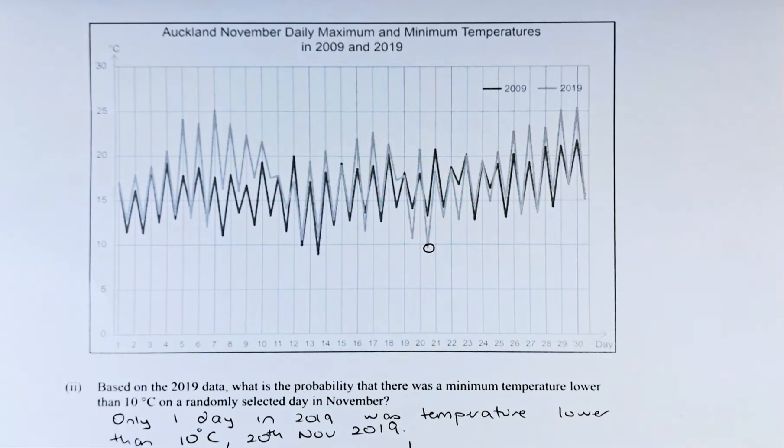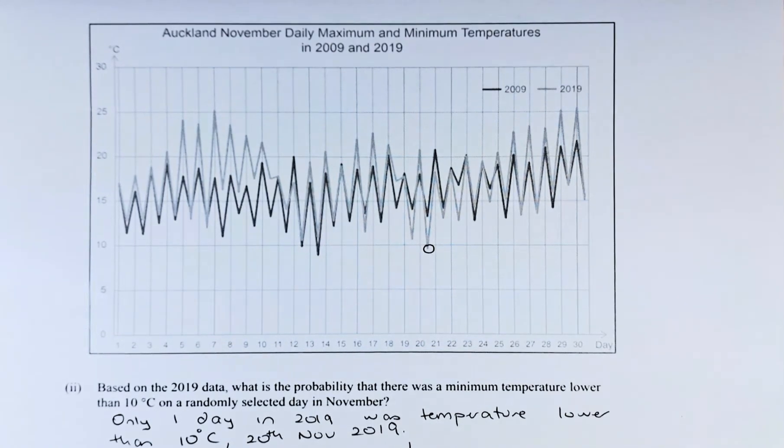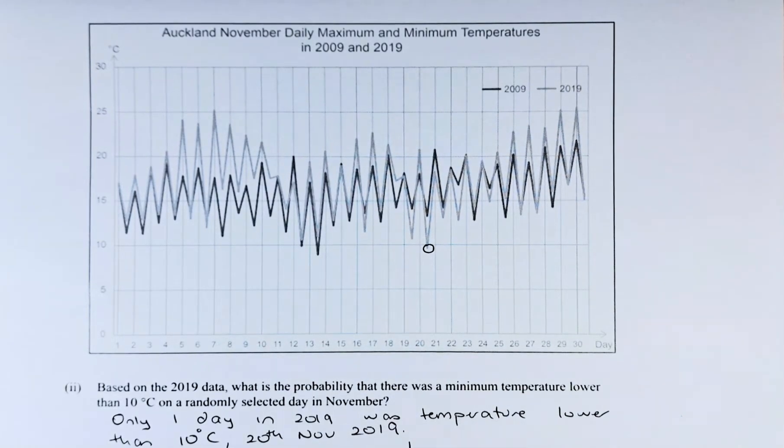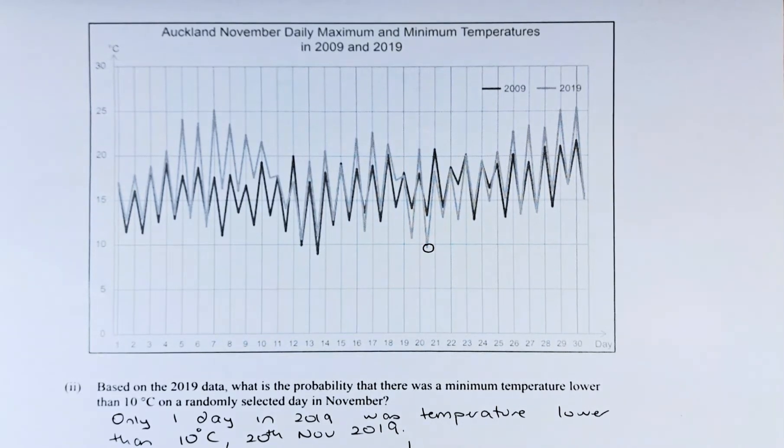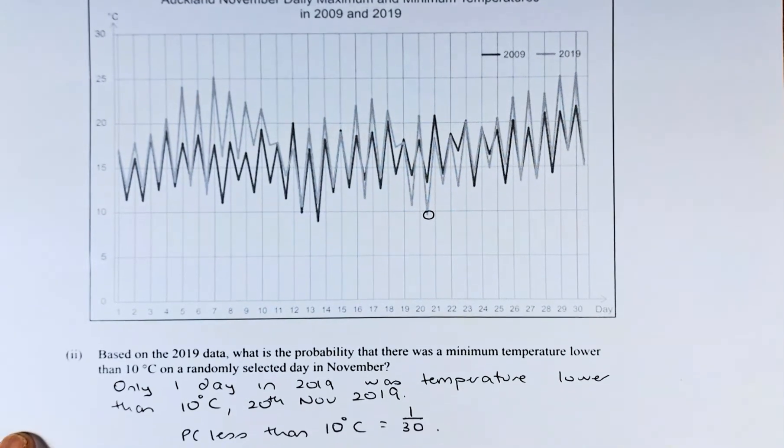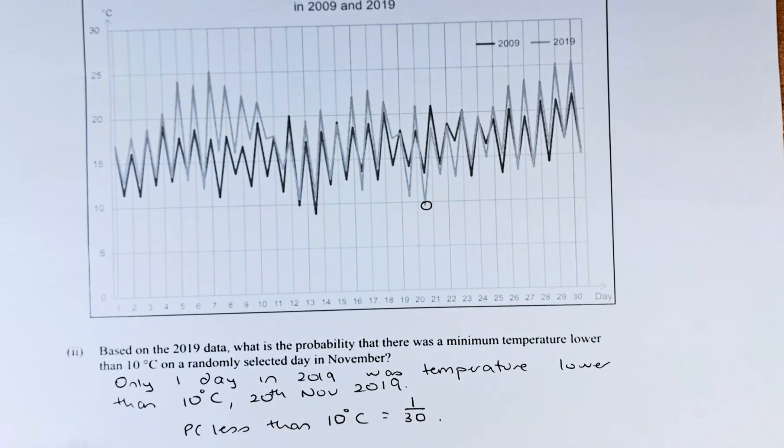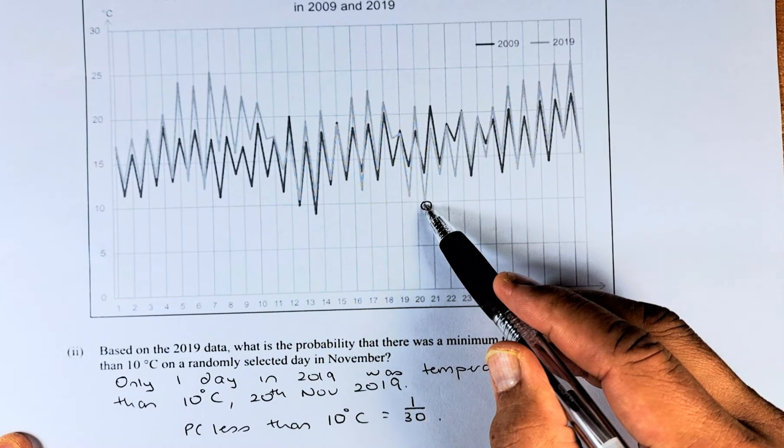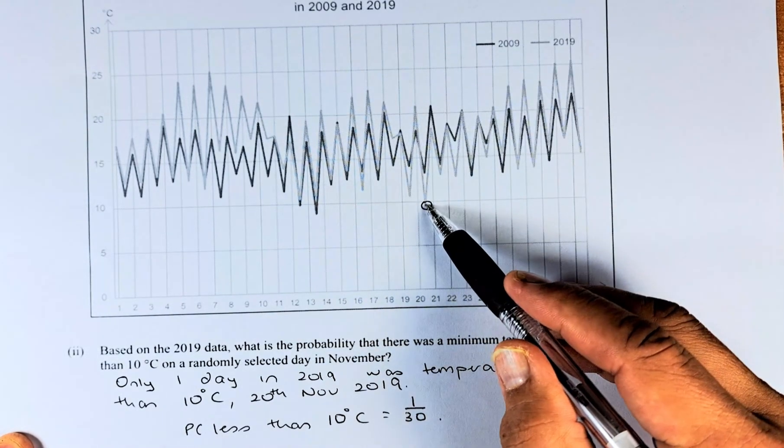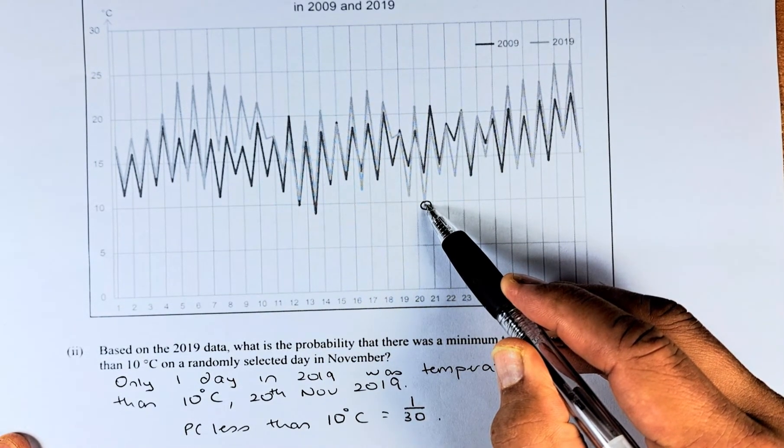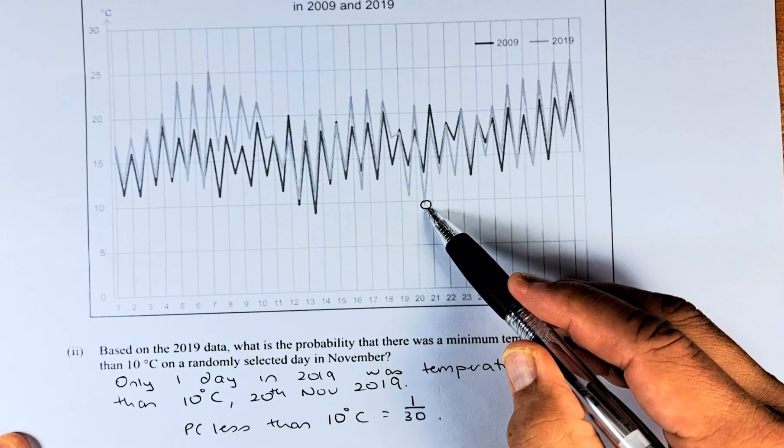The question reads: Based on the 2019 data, so we are looking at the lighter line, was there a minimum temperature lower than 10 degrees on a randomly selected day in November? So you look at the graph. The only day that is below 10 degrees for the lighter line, 2019, was only on this day. This day was the 20th, the 20th of November 2019.